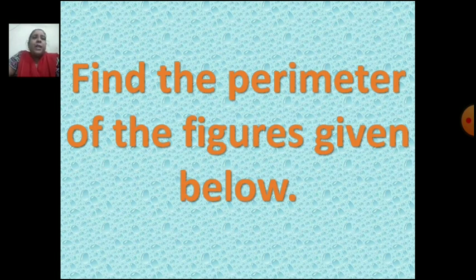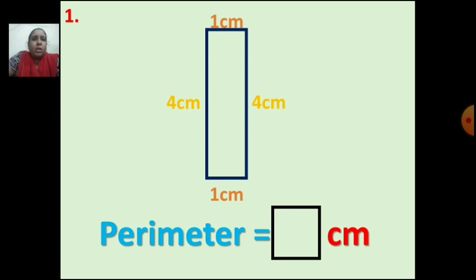First question C: Find the perimeter of the figures given below. Now, you know how to find the perimeter. If you see the first question, what is the shape of this figure? It is a rectangle, and you can see the length of all the sides are given: 4 cm, 4 cm, 1 cm, 1 cm.